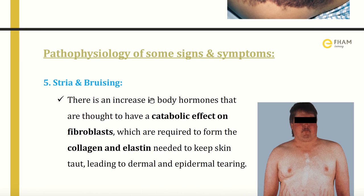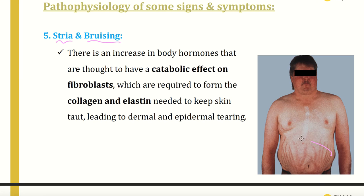The fifth sign is striae and bruising. There is an increase in hormones known to have a catabolic effect on fibroblasts. When fibroblasts are catabolized and destroyed, and given that fibroblasts are required to form the collagen and elastin needed to maintain skin integrity, this leads to dermal and epidermal tearing. The lacking or destruction of fibroblasts means insufficient collagen and elastin to maintain skin integrity.